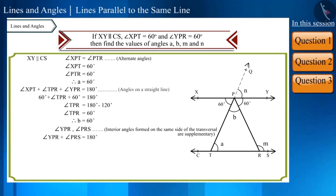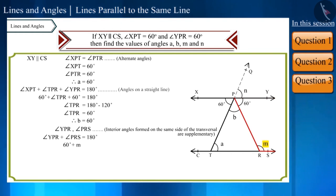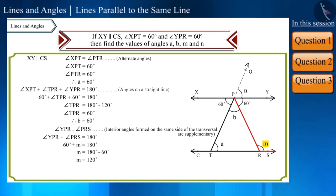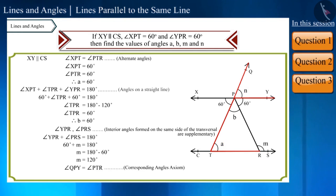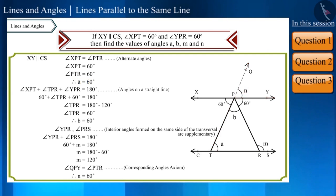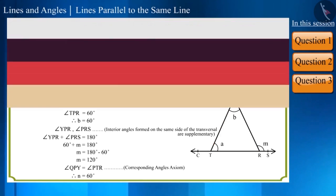Therefore their sum will be 180 degrees. We know that angle YPR is 60 degrees and angle PRS is M, so we get M as 120 degrees. Looking at the figure, angle QPY and angle PTR are corresponding angles — that is, angle A and N are corresponding angles. The measure of A is 60 degrees, therefore N will also be 60 degrees.